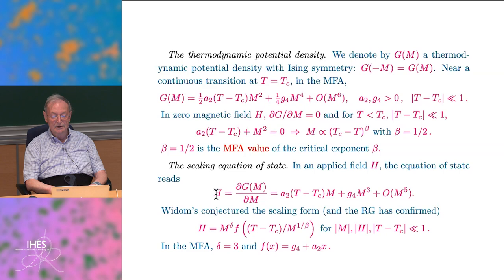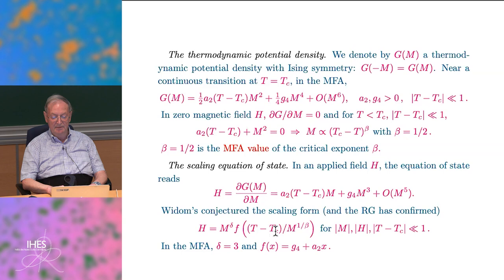If you apply an external field, the equation of state is h equals dg over dm. Widom had conjectured the scaling form—confirmed by the renormalization group—that h should be m to the delta times a universal function of (T minus Tc) over m to the power one over beta. In the mean field approximation, delta is three and the function is linear.